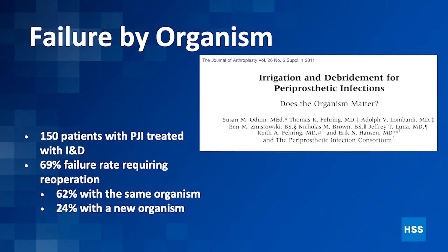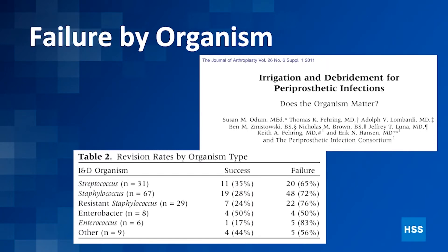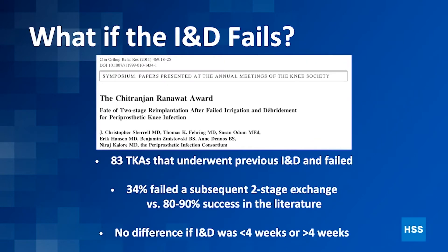Failure by organism: 150 patients with PJI treated with an IND had a 69% failure rate requiring re-operation. 62% had the same organism; 24% had a new organism when they went back the second time. They found that strep and staph had the lowest success rates — really bad organisms. So if you have infections with those very aggressive bacteria, this is somebody you may not want to consider doing IND on.